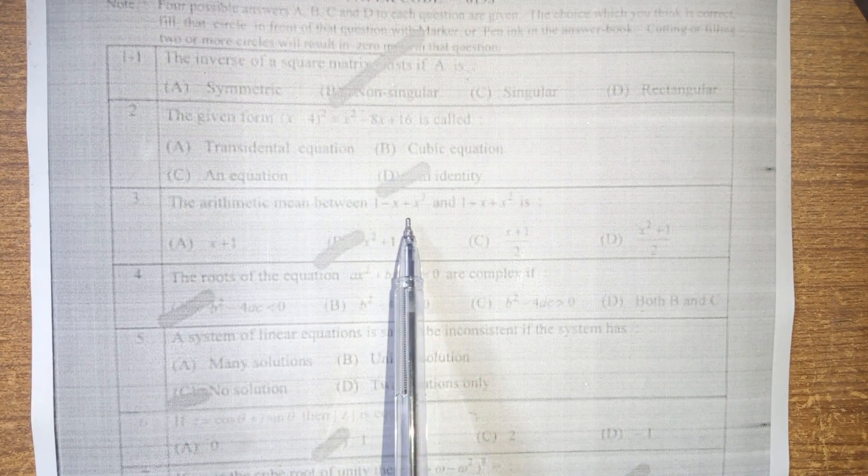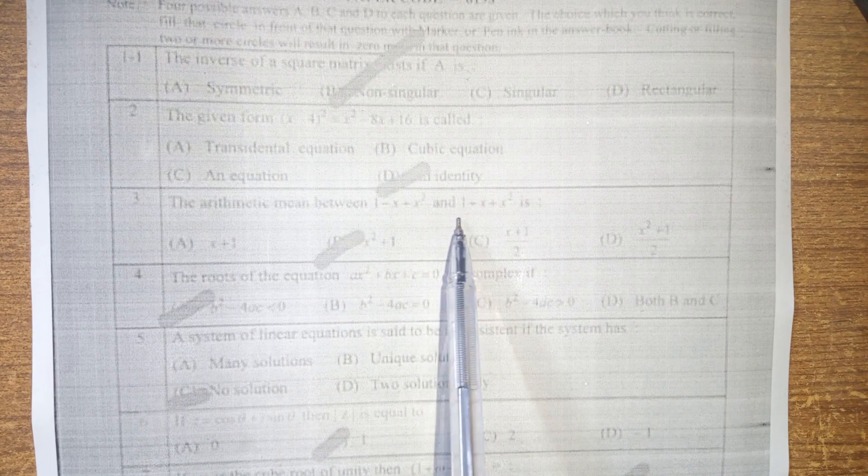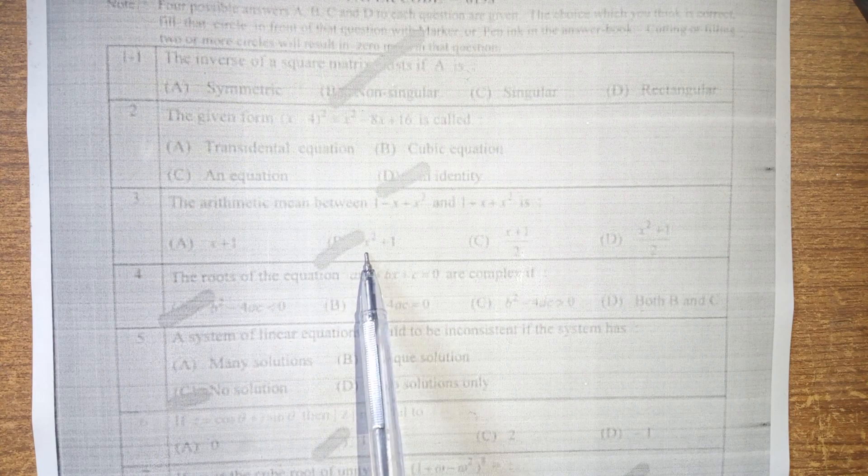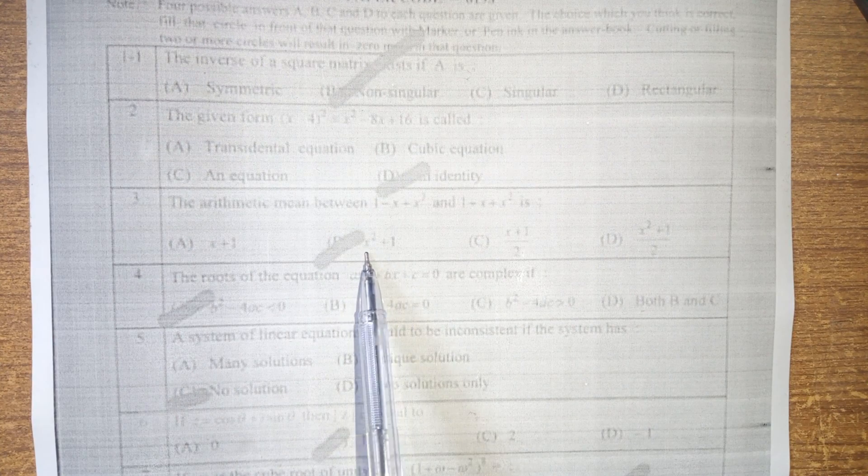After that, the third MCQ is the arithmetic mean between 1 minus x plus x squared and 1 minus x plus x squared is x plus 1 whole squared, x squared plus 1, i.e., option b is the right answer.